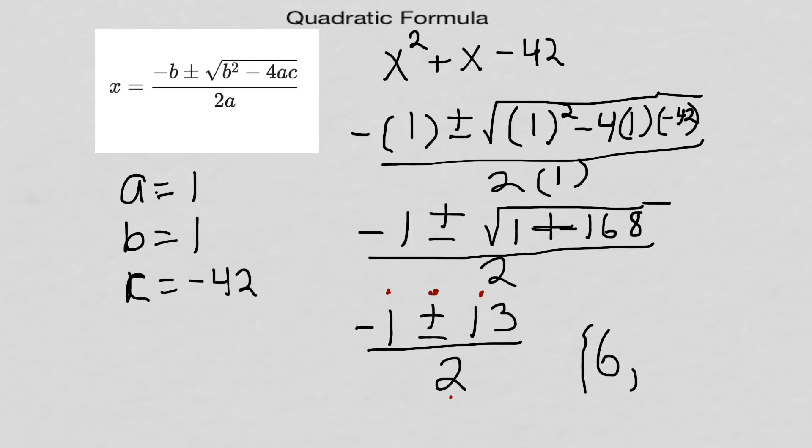Negative 1 minus 13 is gonna be negative 14 divided by 2. That's gonna give me negative 7. That's my other root. So that's my answer for this question.